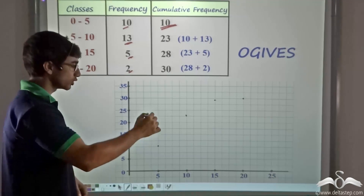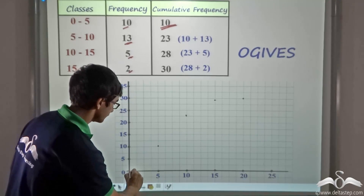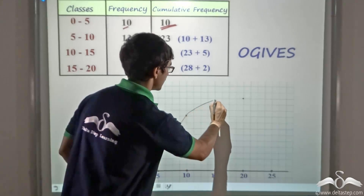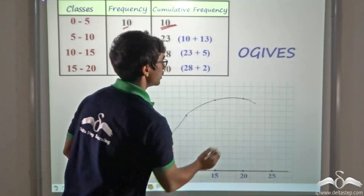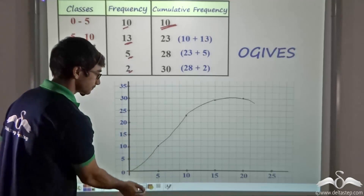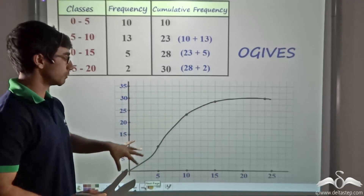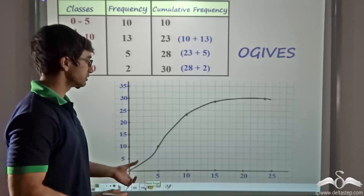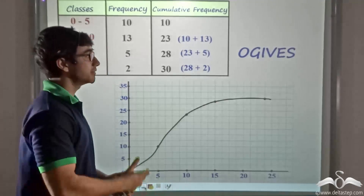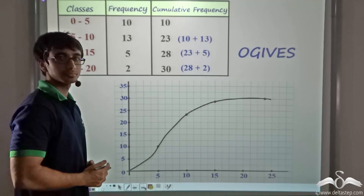To complete the ogive, I start drawing from the origin freehand, ensuring all the plotted points are joined with no point left out. The resulting curve is called an ogive. From the ogive, we can directly read the cumulative frequency for any particular class. More applications of the ogive will be seen in future lectures.